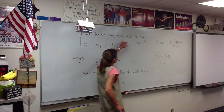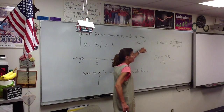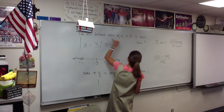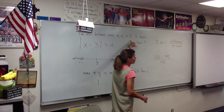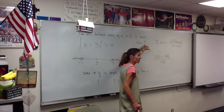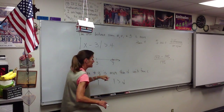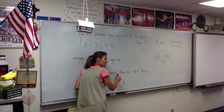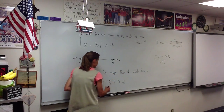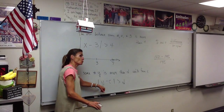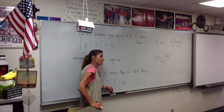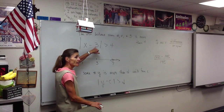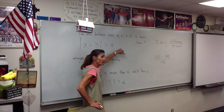Up here, x and 3 were 4 units apart. What are d units apart here? y and c. The distance between y and c is more than d. The distance between x and 3 is more than 4.